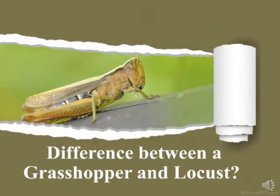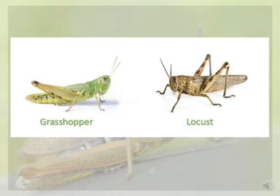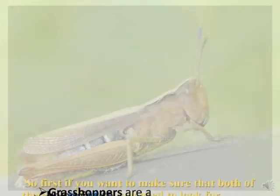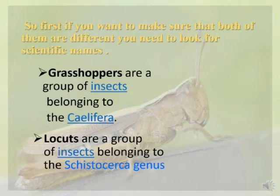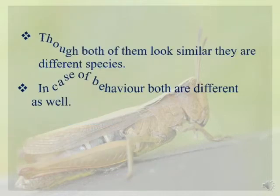The difference between grasshopper and locust: both look similar in structure. To make sure they are different, you need to look at their scientific names. Grasshoppers are a group of insects belonging to the Caelifera suborder, while locusts are a group of insects belonging to the Schistocerca genus. Both have different scientific names, even though they look similar.